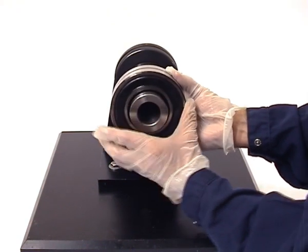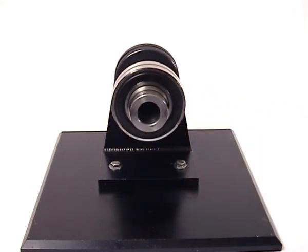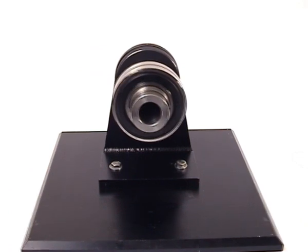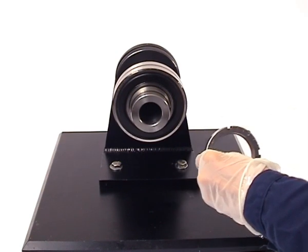Push the bearing up onto the sleeve until the bearing just makes full contact with the sleeve. Then chamfer facing the bearing, run the nut up the thread until it contacts the bearing.